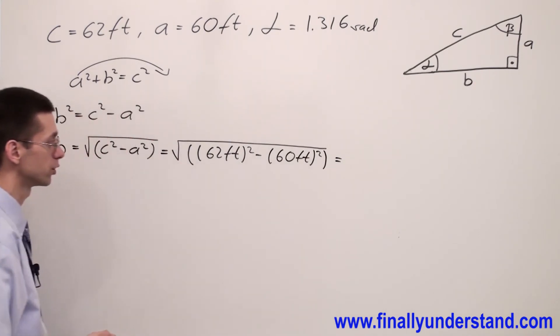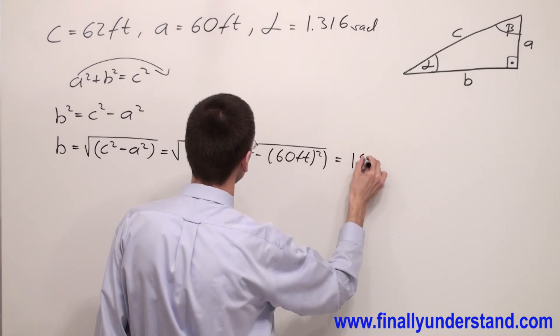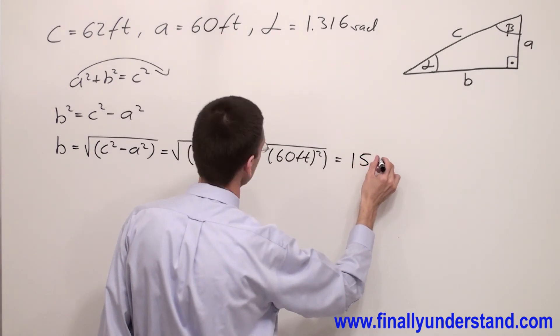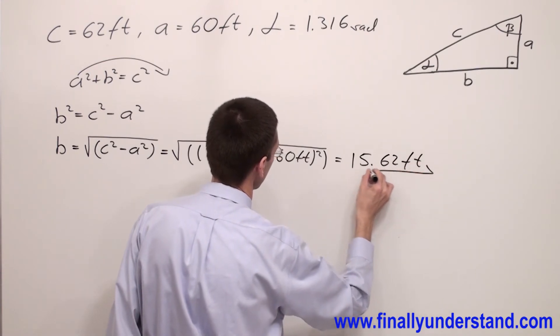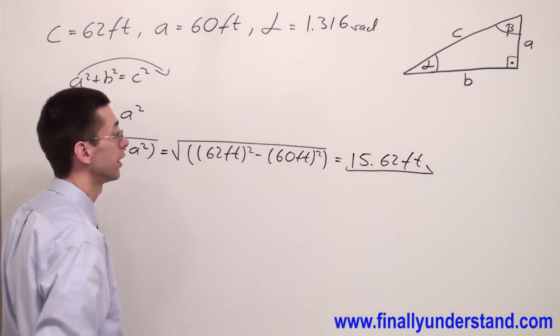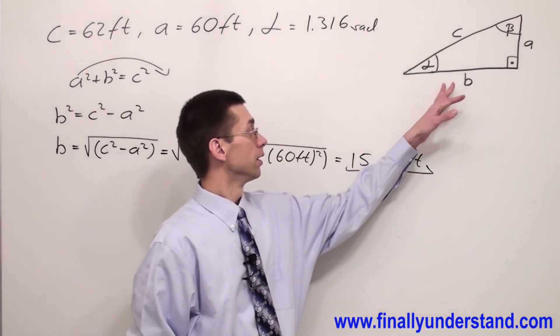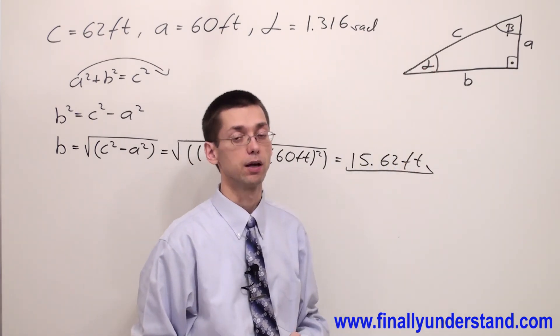Plugging these values into the calculator, you're supposed to get 15.62 feet. And this is the length of my adjacent side to angle alpha.